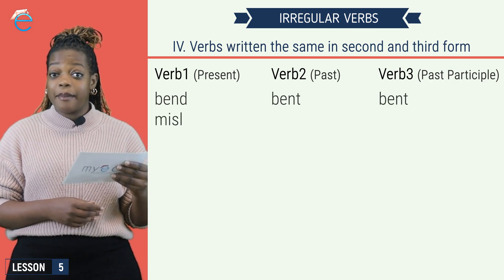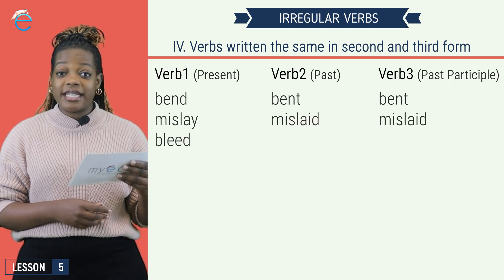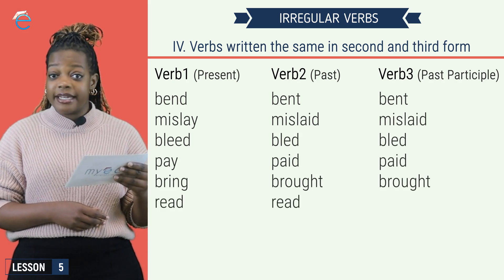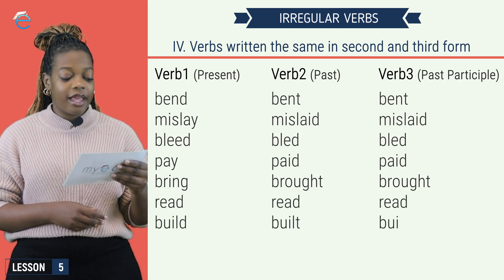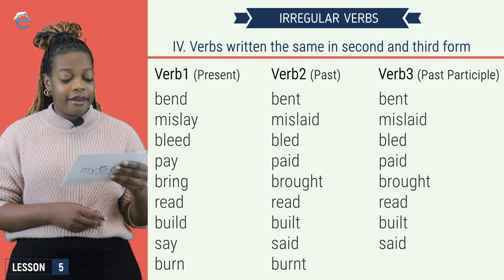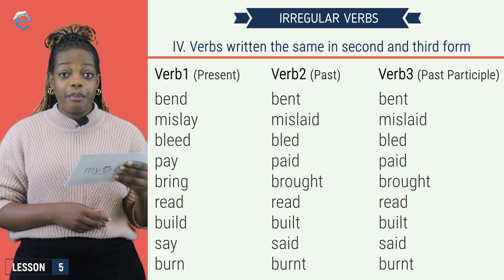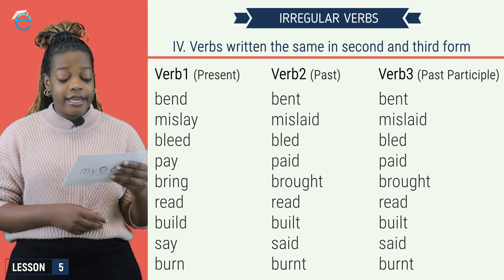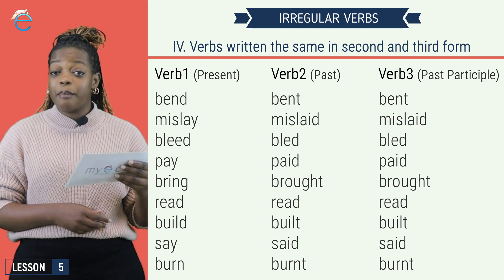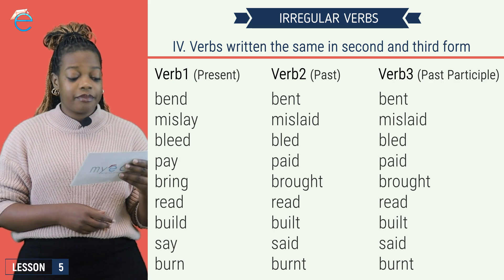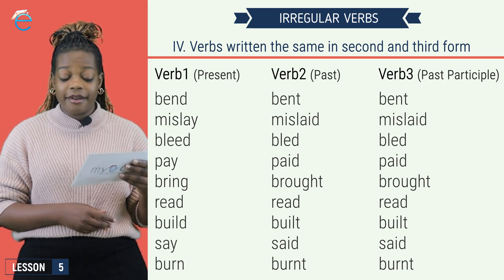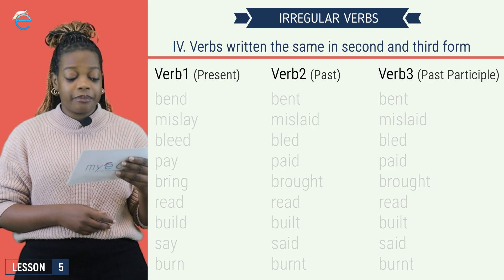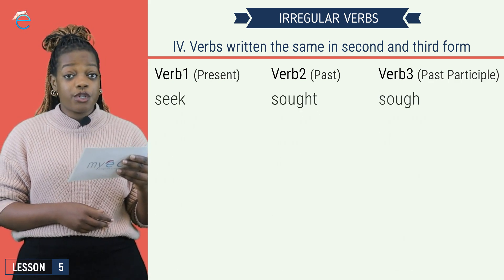Group four are irregular verbs that are written the same in the second and third form. Bend, bent, bent. Mislay, mislaid, mislaid. Bleed, bled, bled. Pay, paid, paid. Bring, brought, brought. Read, read, read. Build, built, built. Say, said, said. Burn, burnt, burnt. Seek, sought, sought.